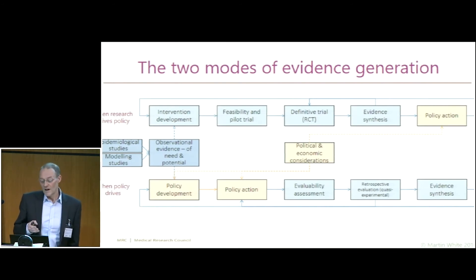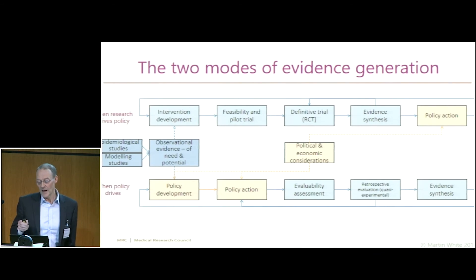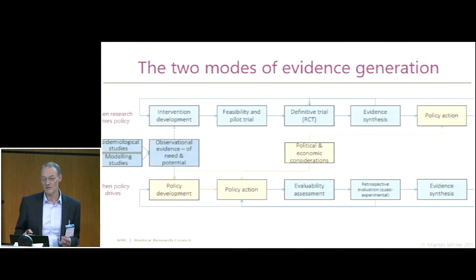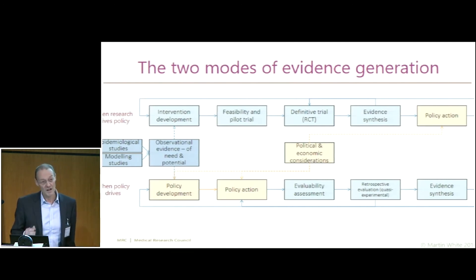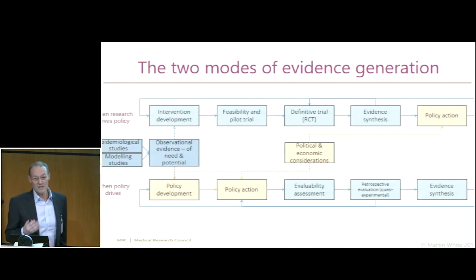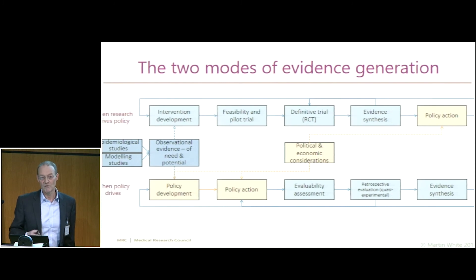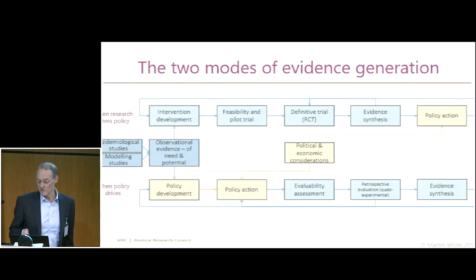The other mode relates to population-level policies, many of which are introduced without evidence of effectiveness. As researchers, we're then in a situation where we have to work out whether we can evaluate the effectiveness of the intervention, doing things like evaluability assessment, and if we can, a retrospective evaluation — or, if we're very lucky, a prospective evaluation, such as we've been able to do with the soft drinks industry levy. Observational evidence of need and of the potential for interventions is also critical, and the modelling work done on sugar taxes in advance has proved really important in informing those kinds of interventions.